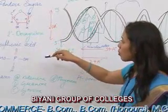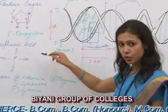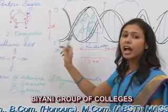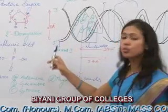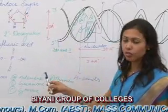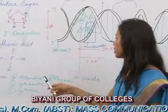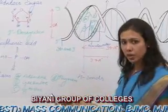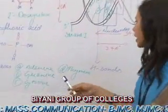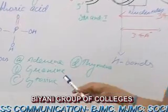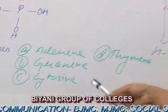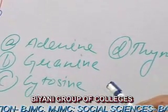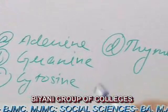Coming on to the second component, that is the phosphoric acid, which provides the phosphate group within the DNA and is also responsible for the acidic nature of DNA. The third component is the bases — there are 4 bases found in DNA: adenine, guanine, cytosine, and thymine, also designated as A, G, C, and T.